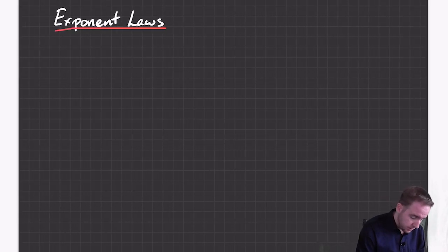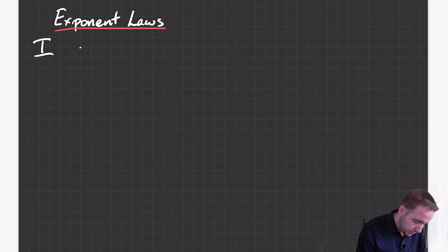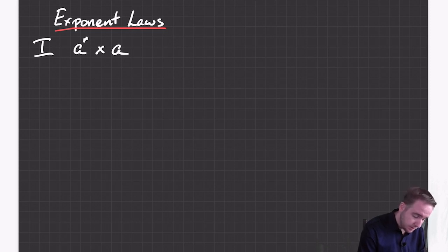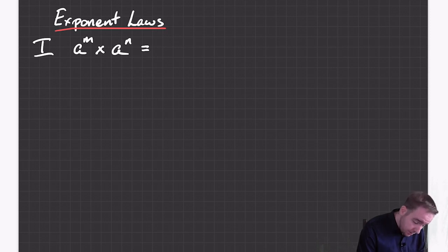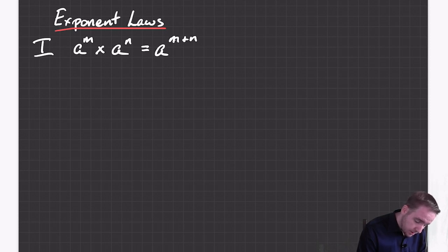The first one is if you have two numbers multiplied together that have the same base but different exponents, that can be combined together and you have one exponent, but you add those two numbers together.